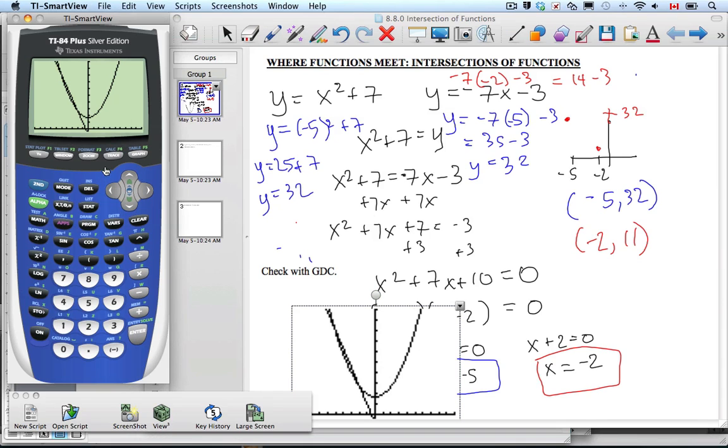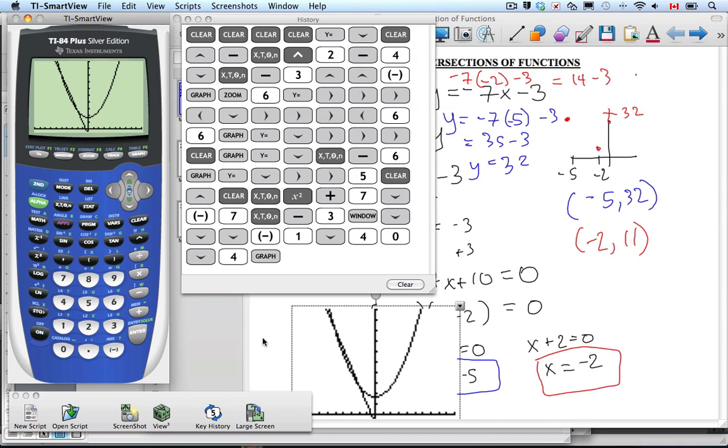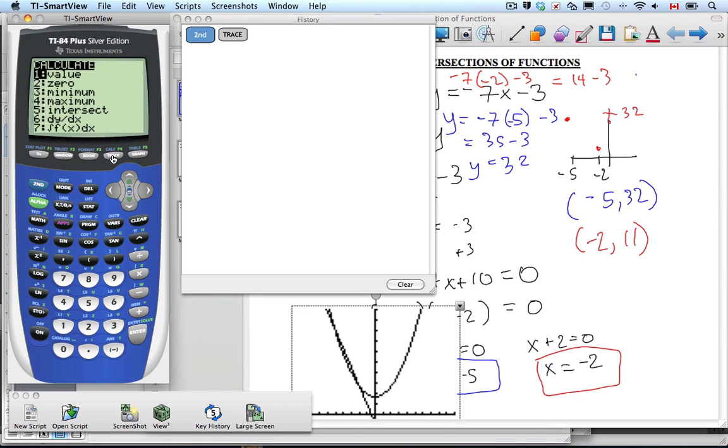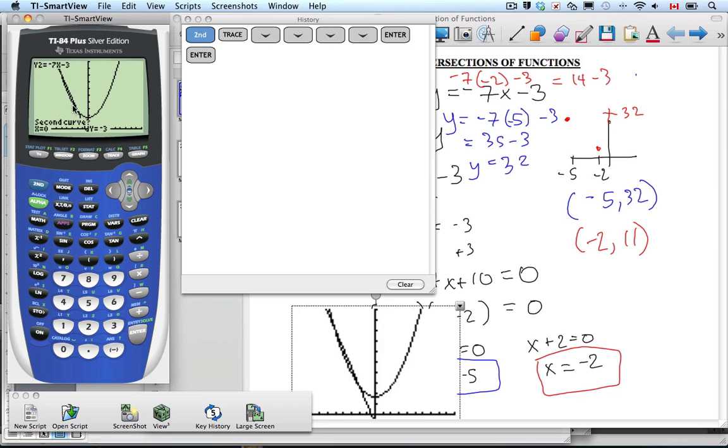We can find the exact intersection points using our graphing calculator. Oh, cool. So let me do the key history. I'll pull that up, and you can follow along with what we're doing. So I'm going to go 2nd, calculate which is under trace, and I'm looking for the intersection. So number 5 is intersect. The question asks for the first curve, which is the parabola, x squared plus 7. Enter. Asking for the second curve, which is the line, negative 7x minus 3. Enter.